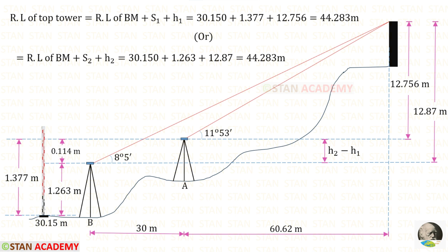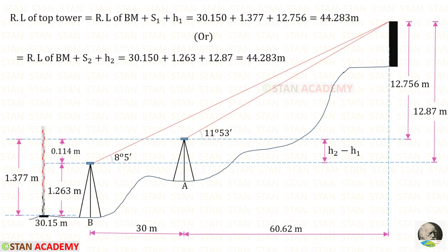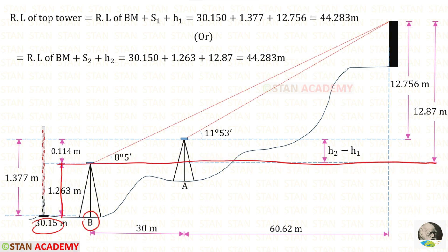Now we find the reduced level of the top of the tower in two ways. First method: RL of benchmark plus staff reading S1 from station A plus H1 — this gives 44.283 meters. Second method: RL of benchmark plus staff reading S2 from station B plus H2 — this also gives 44.283 meters. Both methods confirm the reduced level of the top of the tower is 44.283 meters.